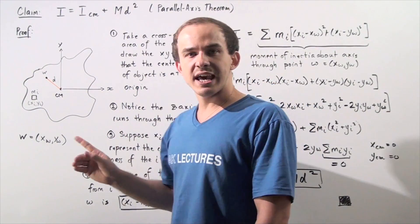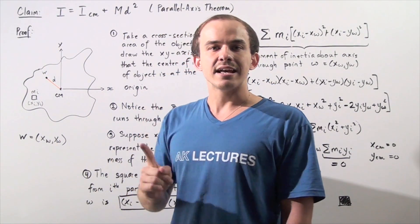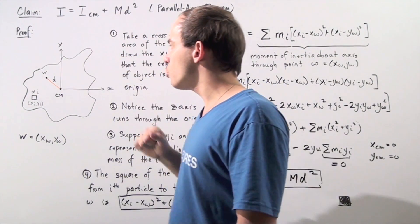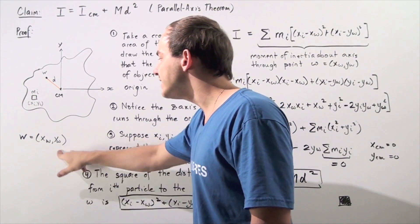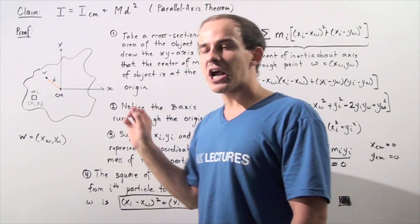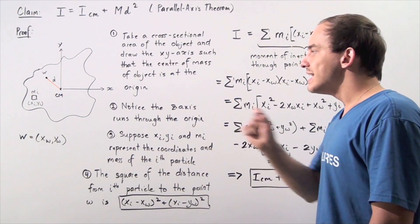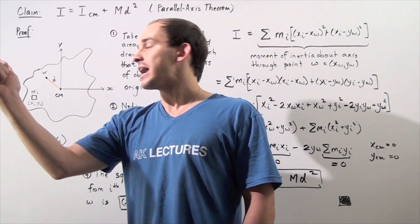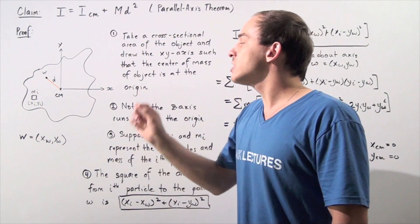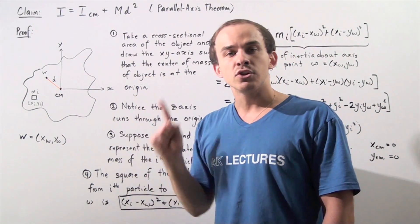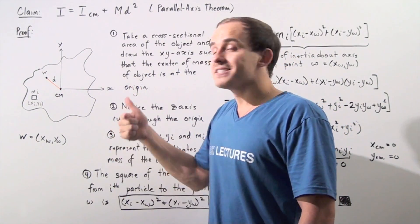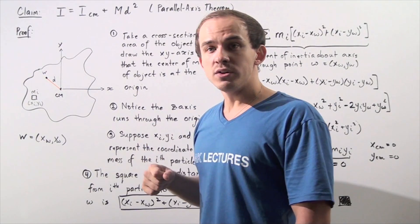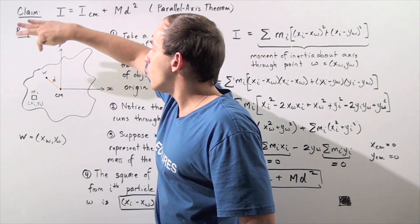The object actually rotates about some point that is not the center of mass. Let's choose that point to lie here — the point w, given by the coordinates x_w, y_w, is the point about which our object is actually rotating. Notice that the z-axis, which goes through the origin, goes directly through the center of mass. This z-axis is parallel to the axis about which our object is rotating — the axis that goes through our point w.